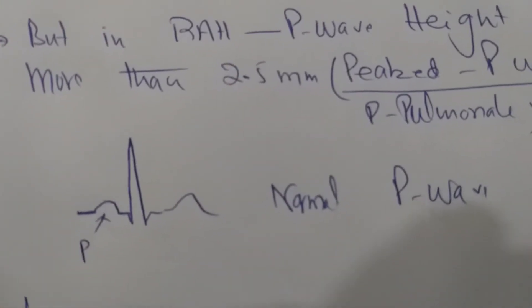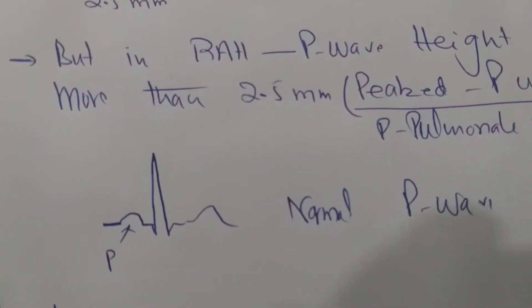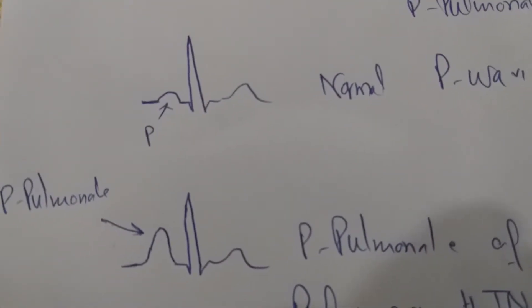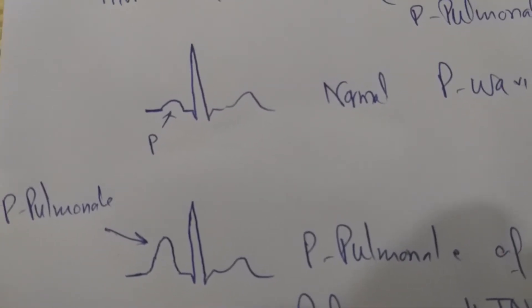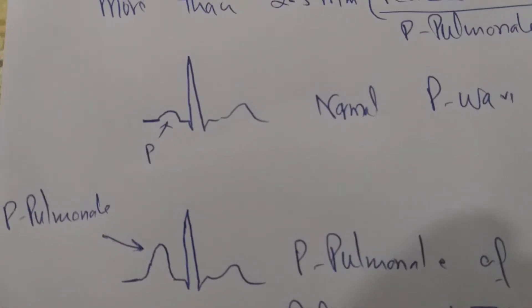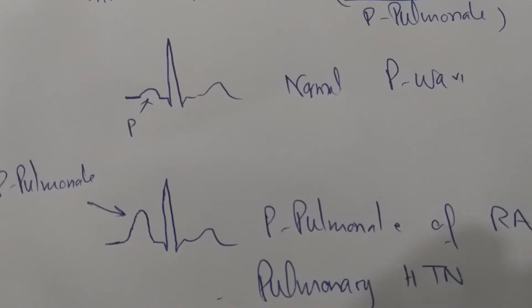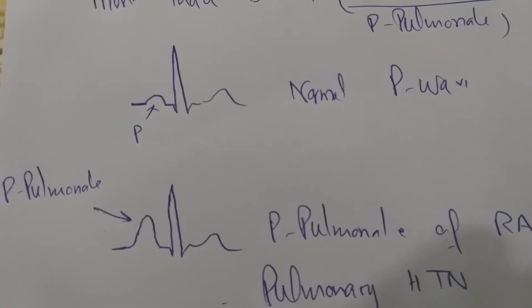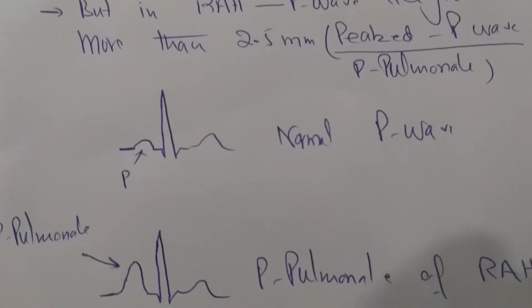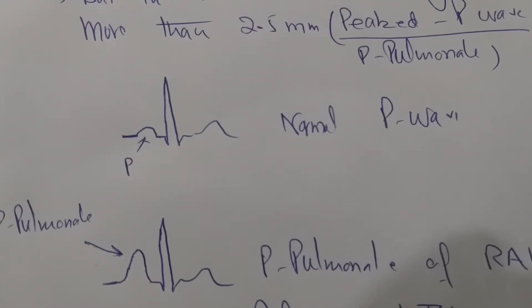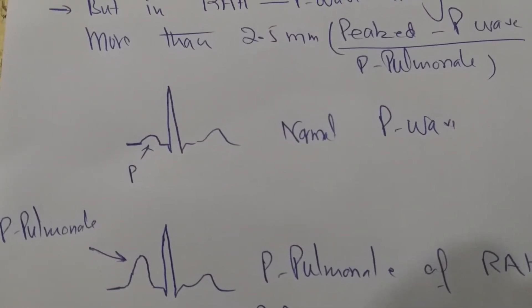For example, looking at this normal P wave, it has a height well within the range of 2.5 mm. But this peaked P wave has a height of more than 2.5 mm — this is known as P pulmonale of right atrial hypertrophy. The name 'pulmonale' comes from its major cause: pulmonary hypertension. So whenever you see a heightened P wave in a rhythm lead with height more than 2.5 mm, it indicates the patient has right atrial hypertrophy.